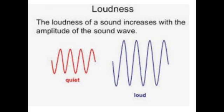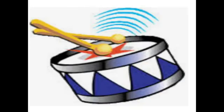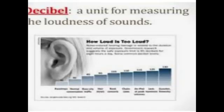The SI unit of amplitude is the meter. When you beat the drum, the skin of the drum vibrates. Sound waves are carried by the vibration of the molecules of air. When the skin moves up and down with greater energy, the molecules of air will move closer together with greater energy. In other words, the loudness of the sound is related to the energy of the waves. The unit for measuring the loudness of sound is the decibel, represented by dB.